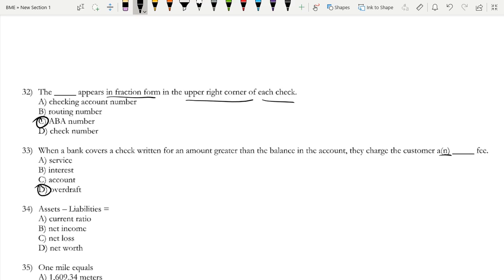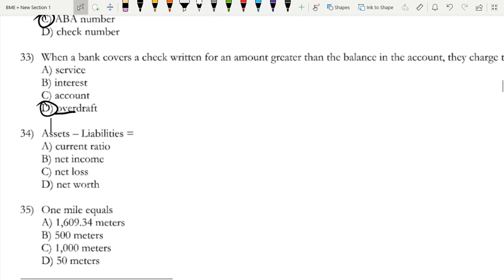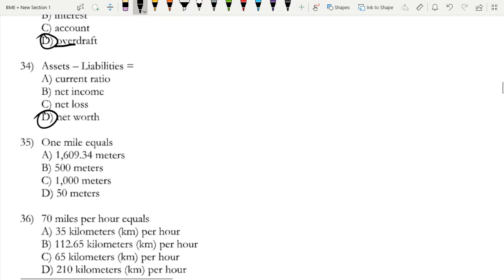Assets minus liabilities—we've gone over this, right? This is the net worth. Assets minus liabilities equals net worth.